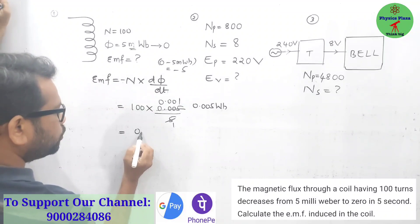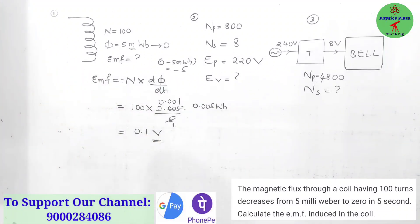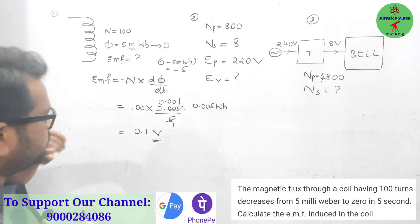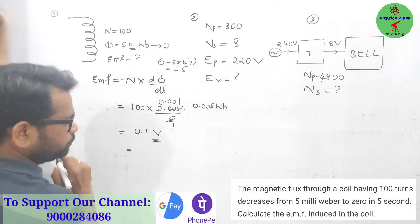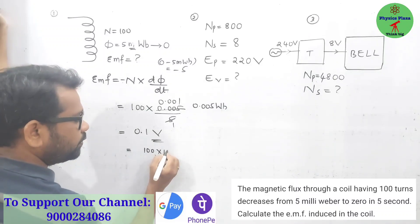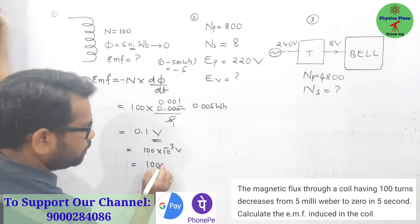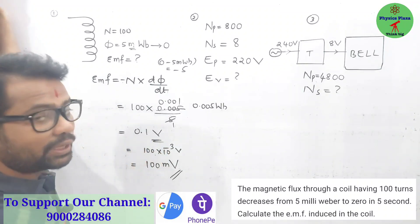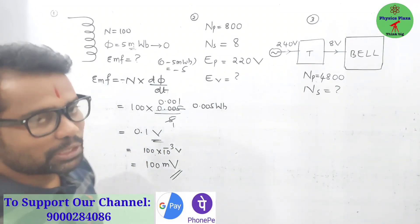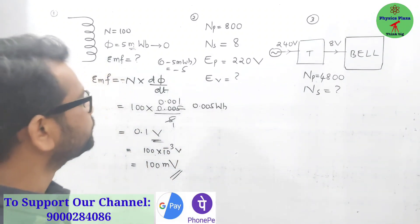5 into 1 is 5, 0.001. So 100 into 0.001 is going to be 0.1 volt. This is how we solve. Or else this can be written as 100 millivolt also. After getting this 0.1 volt, many students think we got a wrong answer because in the textbook it is given 100 millivolt, but that can be changed, it's not a big task.